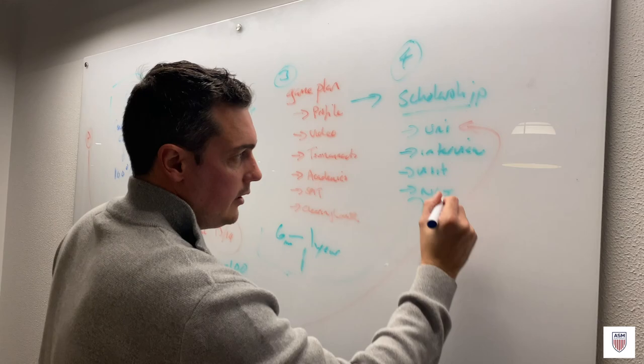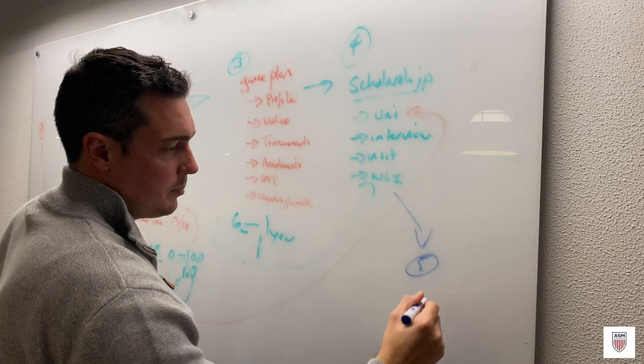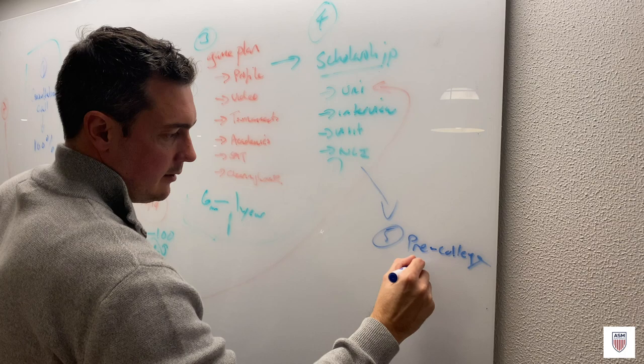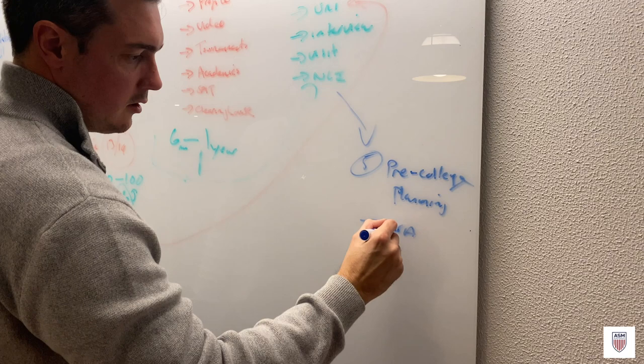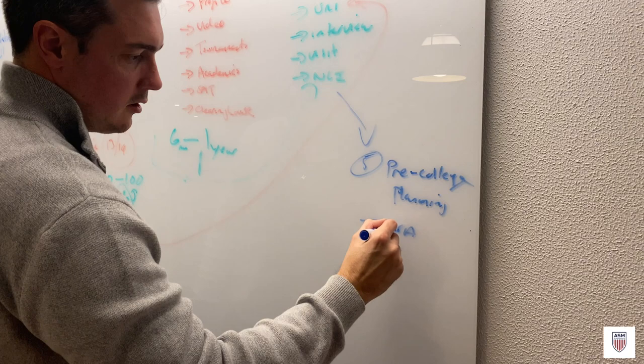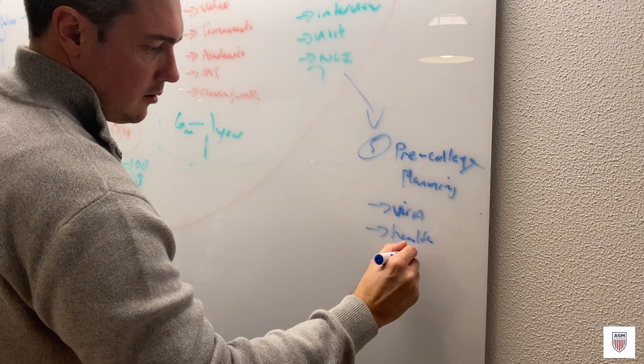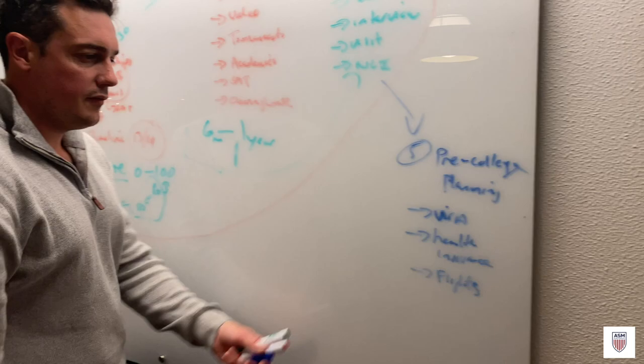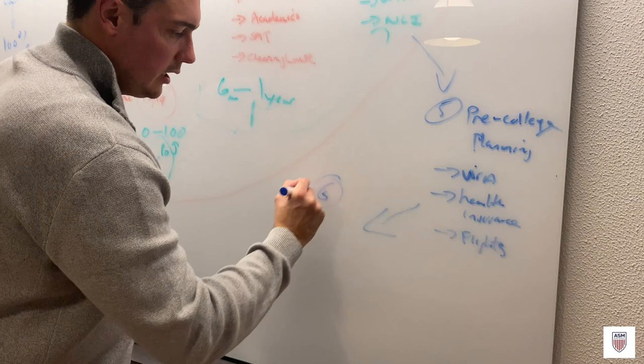Then if that goes well and once you've done your scholarship process and you've got accepted, then you've got five, which is basically pre-college planning. And that's going to be your visa if you're not American, your health insurance, and then you're going to do your flights as well, get your flights ready. So visa, health insurance, and flights, get that all scheduled.